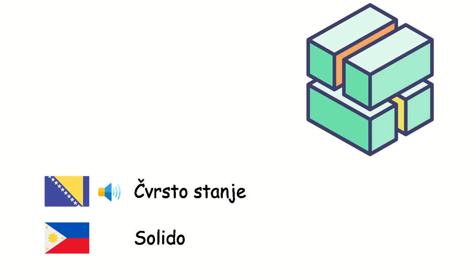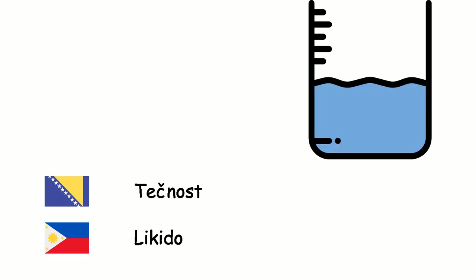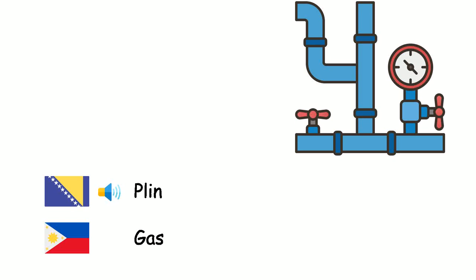Čvrsto stanje — Solido. Tečnost — Likido. Klin. Gas.